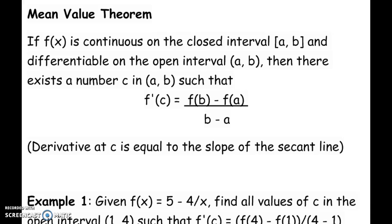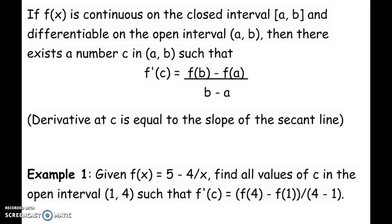A secant line is a line that is through two points on your curve. So we are trying to find where the derivative has the same slope as the slope between two points on the same curve.